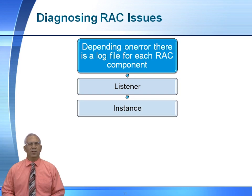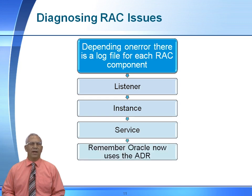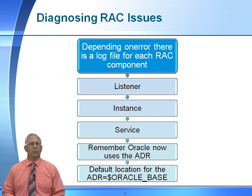Depending upon the RAC environment, we will have a log file for each individual component. We will have a log file for things like the listener, the instance, your service, as well as things like your cluster ready services, cluster synchronization services, your ONS, and your event monitors. All of these trace files and log files are now located under the Automatic Diagnostic Repository in an Oracle 12c environment.